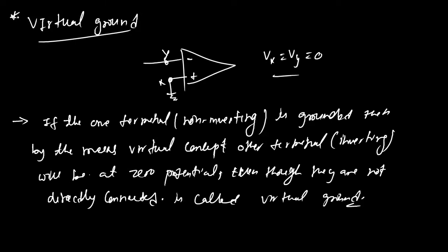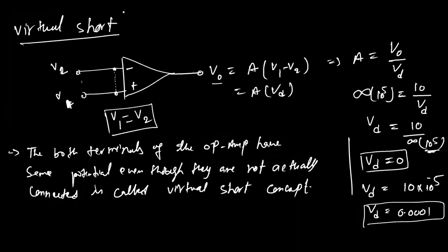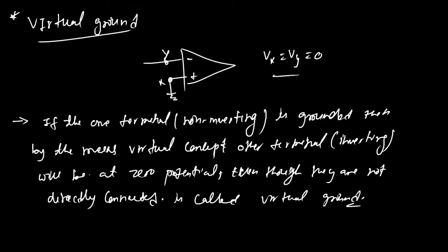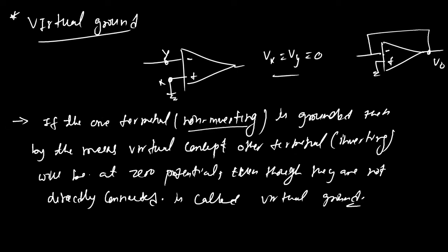Virtual ground and virtual short are two aspects of the same concept and are very important, because all upcoming feedback amplifier applications are based on these two concepts. When an op-amp's output is fed back to the inverting input, it forms a feedback amplifier. When checking which terminal is at ground or which terminals are virtually shorted, we generally look at the non-inverting terminal, since the inverting terminal is usually in the feedback path.